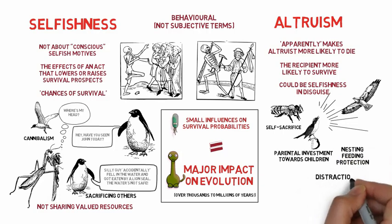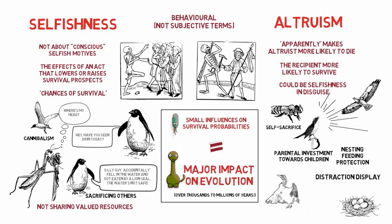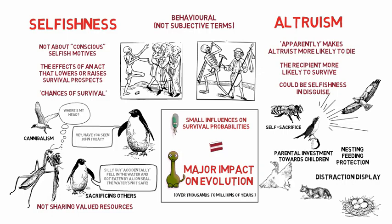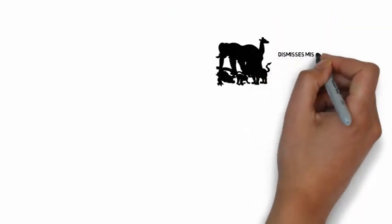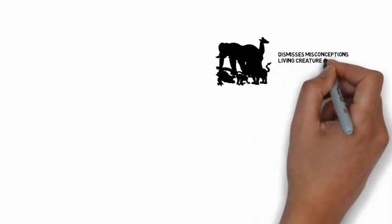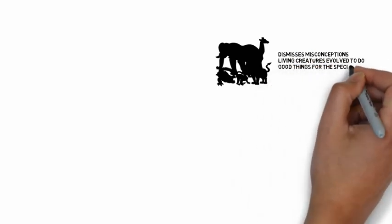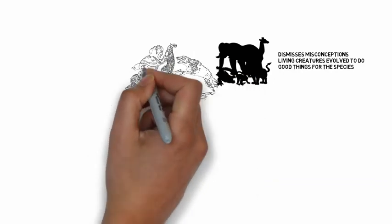An example is a distraction display where a mother bird feigns injury by limping away from the nest and holding out one wing to pretend it was broken. A predator such as a fox will be lured away from the nest containing the chicks, and then the parent bird gives up the pretense and leaps into the air when the fox tries to bite it. Dawkins dismisses misconceptions of altruism in biology — that living creatures have evolved to do good things for the species or the group — noting this belief is common because we see it in reproduction and parental care towards young.